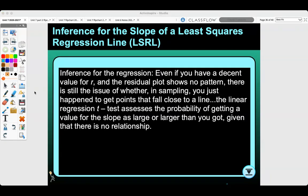Inference for the regression. Even if you have a decent value for r and the residual plot shows no pattern, there is still the issue of whether in sampling, you just happen to get points that fall close to a line. The linear regression t-test assesses the probability of getting a value for the slope as large or larger than you got, given that there is no relationship.